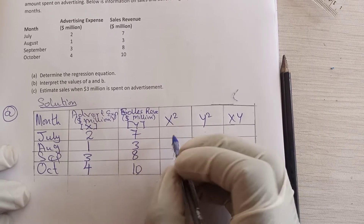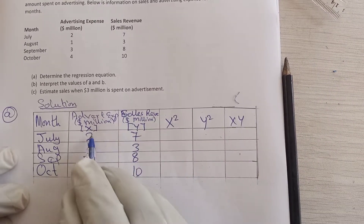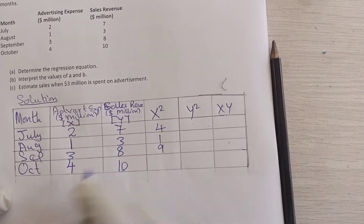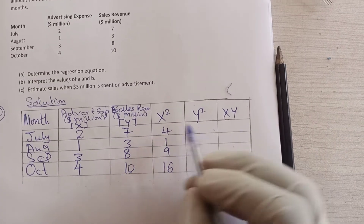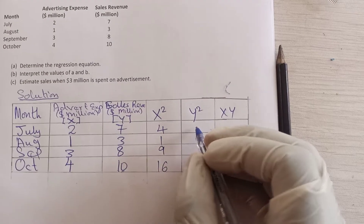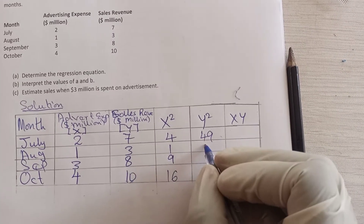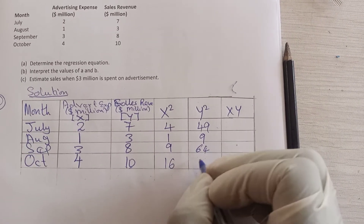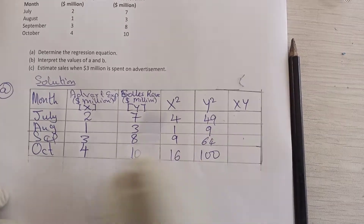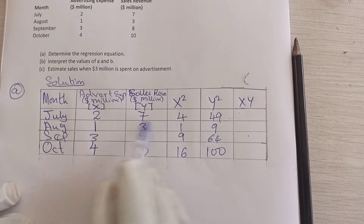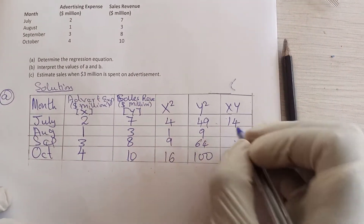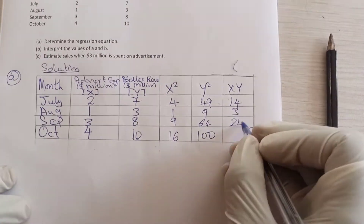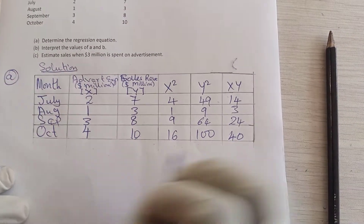To get x²: 2²=4, 1²=1, 3²=9, 4²=16. For y²: 7²=49, 3²=9, 8²=64, 10²=100. For xy, multiply each x by its corresponding y: 2×7=14, 1×3=3, 3×8=24, 4×10=40.